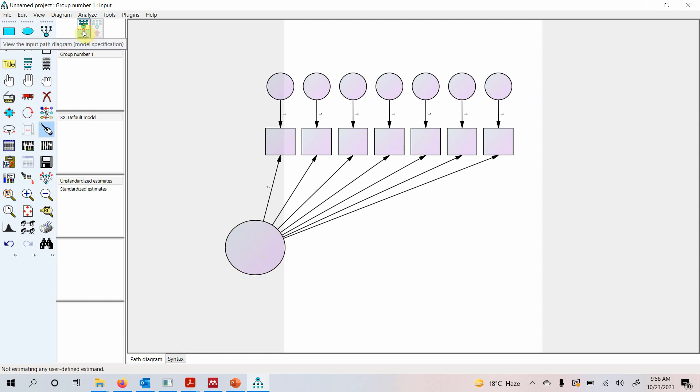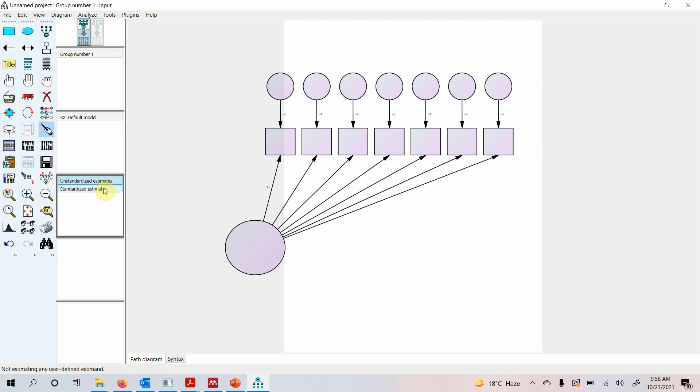This is your input model, and once you run the model, you can see the loadings and all these statistics by clicking this. This is your groups if you've got groups in your model. These are your models. These are your estimates—you want unstandardized or standardized estimates.